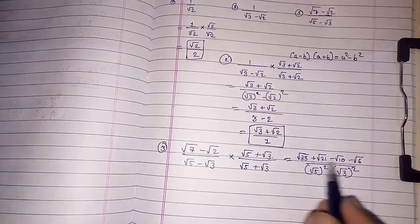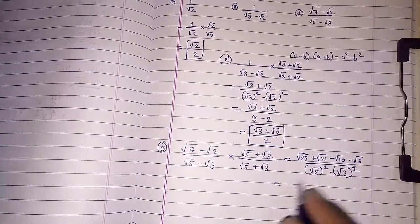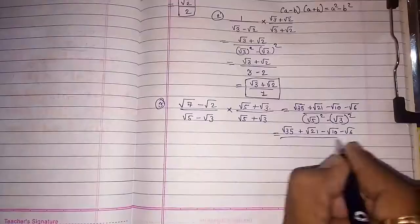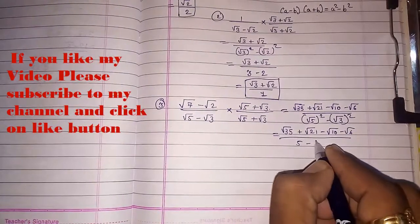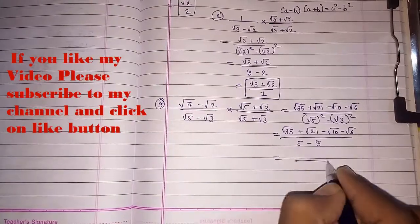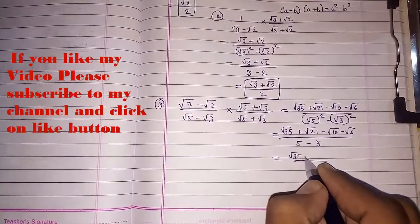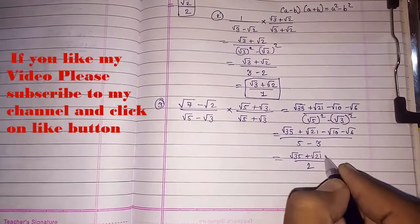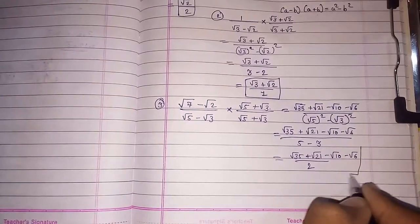You can see all numbers are different. No like terms. We cannot add in numerator. Same number will be remaining. In denominator, five minus three. So, two. And in numerator, root thirty-five plus root twenty-one minus root ten minus root six. This is what we found.